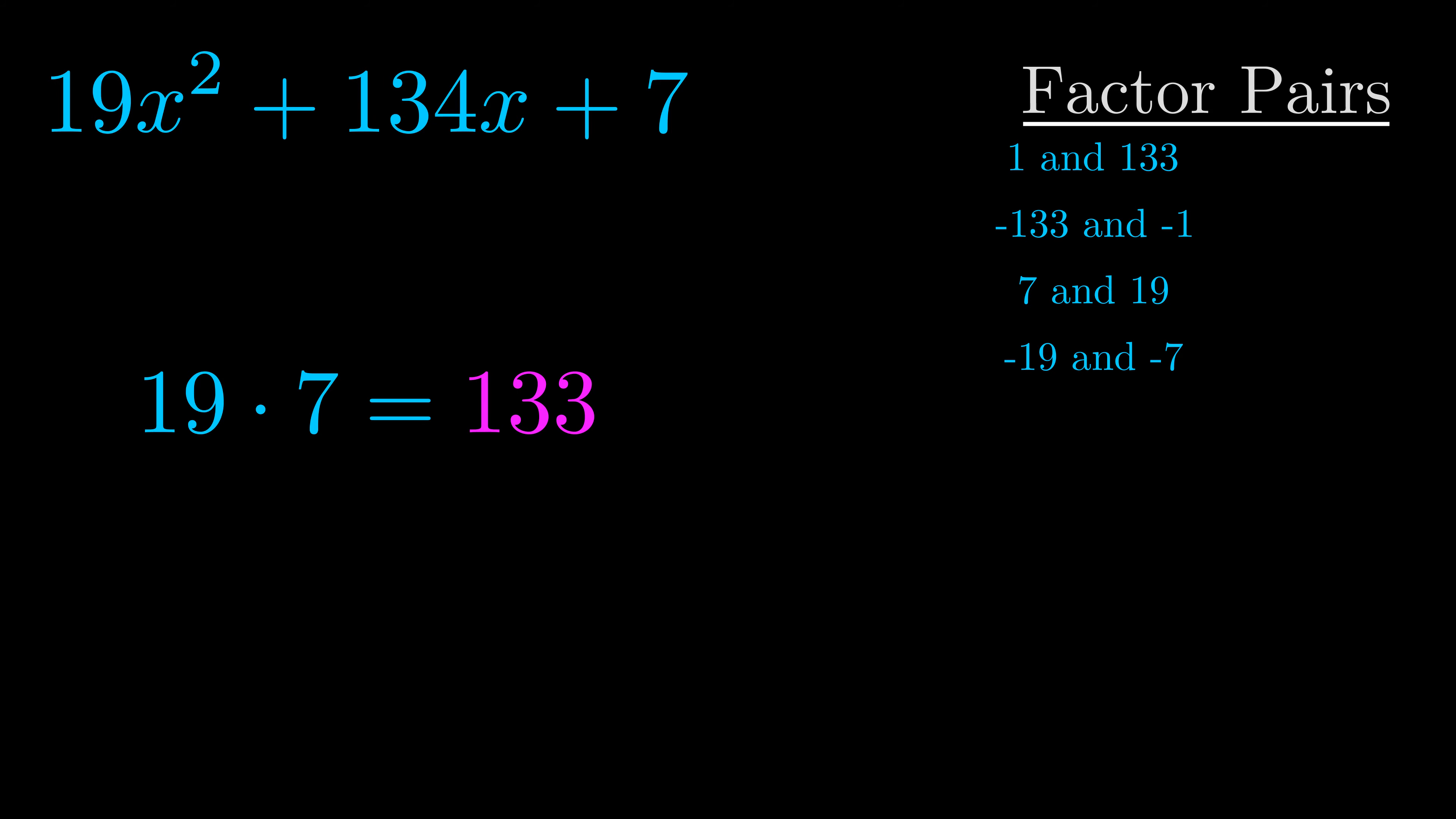Once you have these factor pairs, the goal is to find which of these pairs adds to the b value. The b value is the coefficient on the x term. That's the middle term, the one that we haven't done anything with yet. And really this is the only factor pair that we need.